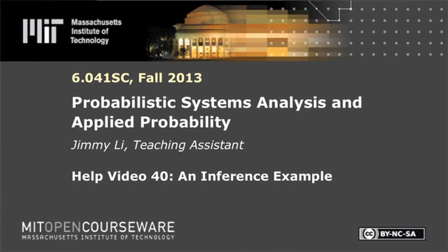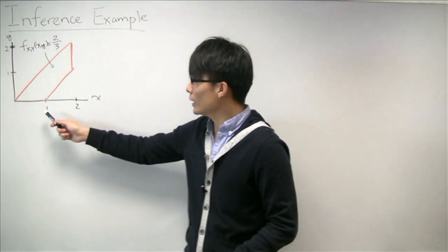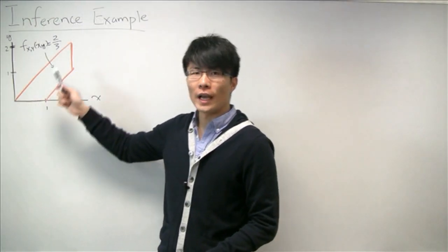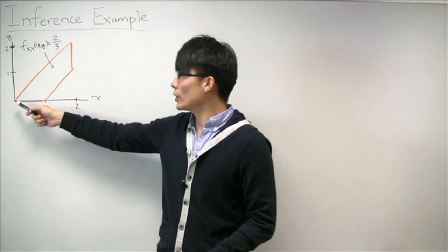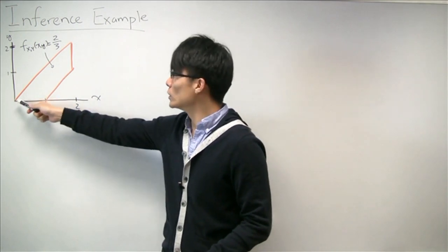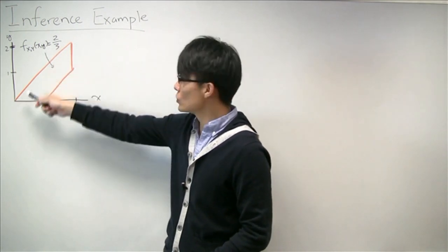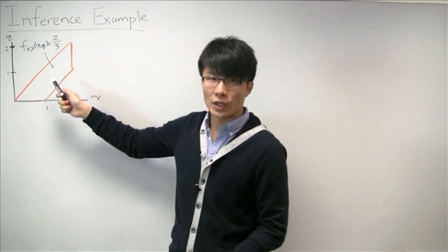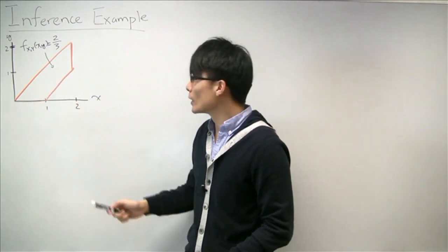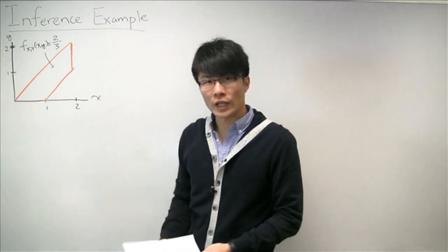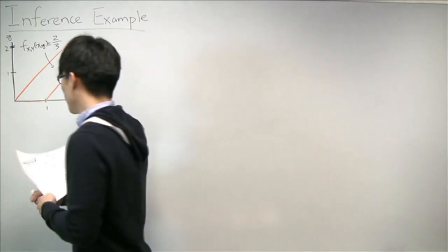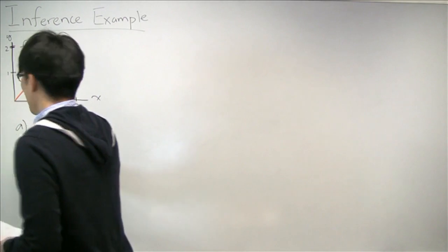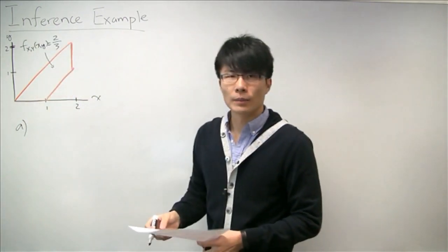In this session, we're going to cover a nice review problem that will look at how to infer one random variable based on another. In this problem, we're given two random variables X and Y, and we're also given their joint PDF, which is a constant 2/3 within the region bounded by these orange lines, and outside of the region, the joint PDF is 0. The first thing we're asked to do is find the LMS estimator of Y based on X.